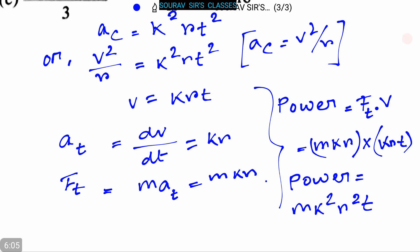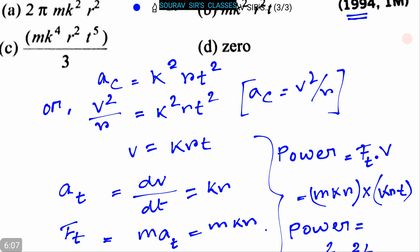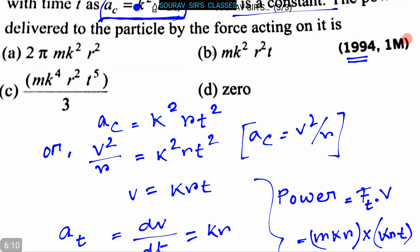So here option b, that is m k square r square t, is the correct answer.